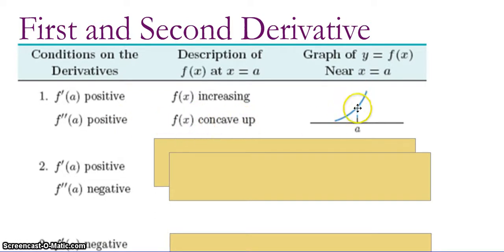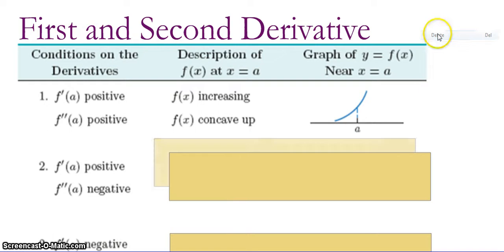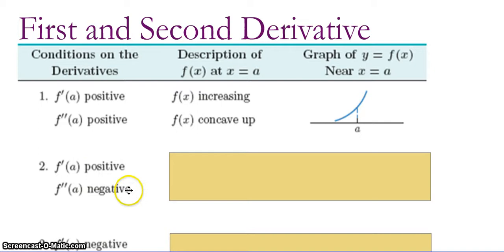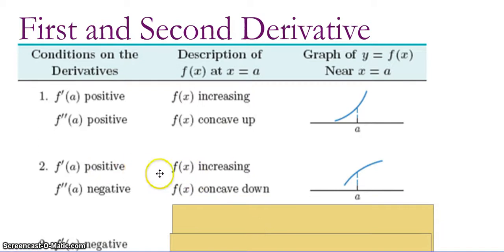So this is an example of what that might look like if this is our point A. What if the first derivative is positive at A, but the second derivative is negative at A? Since the first derivative is positive, the function is still increasing. But since the second derivative is negative, now the function is concave down.